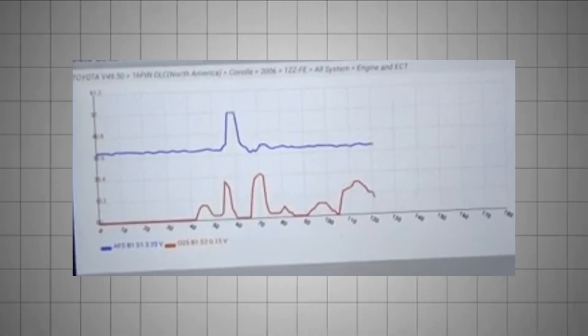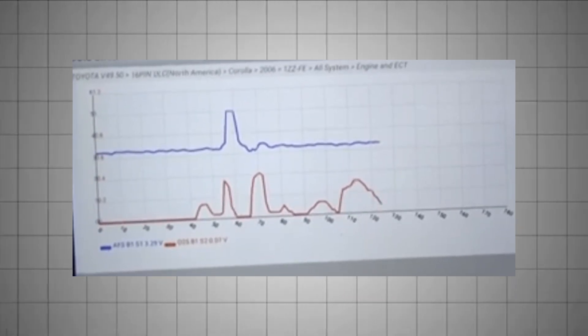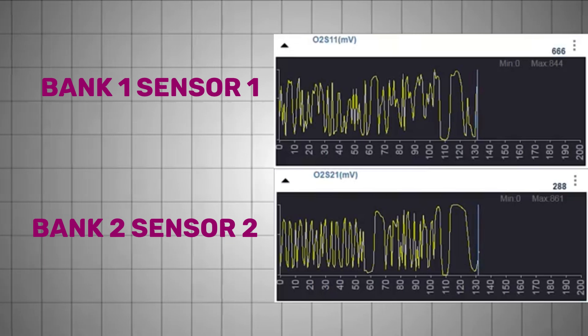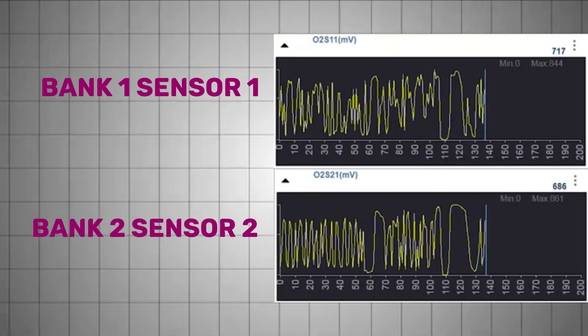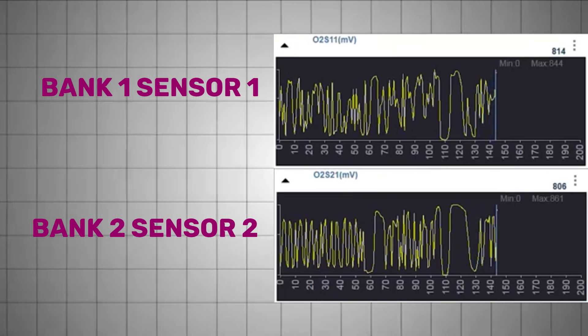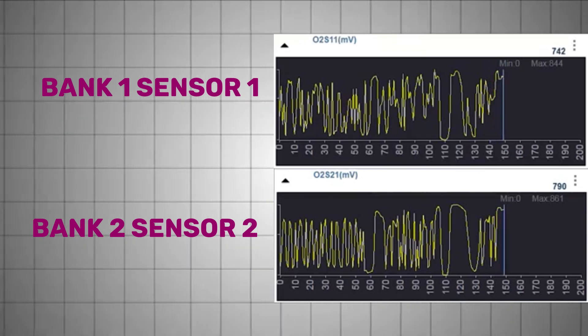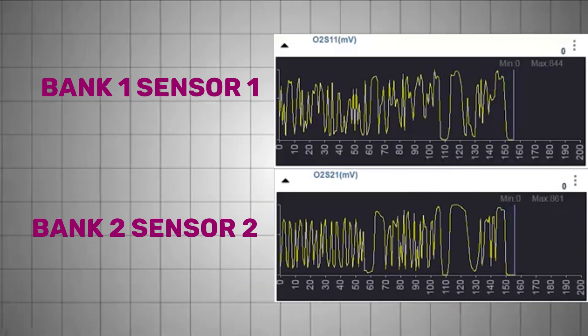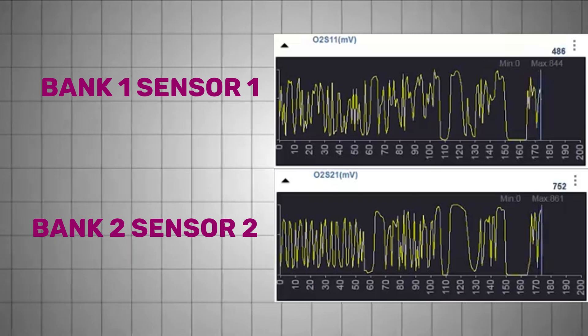Low or inconsistent cross-counts suggest a lazy sensor that isn't responding to changes in exhaust gas composition as quickly as it should. Exact numbers can vary, but as a general rule, you want at least 8 to 10 cross-counts in 10 seconds on most systems.